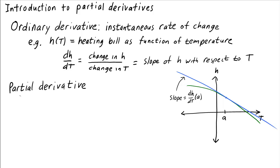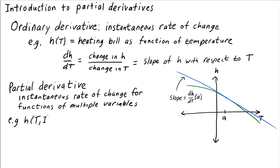A partial derivative extends this idea to functions of multiple variables. For example, we could extend our heating bill function so that it gives the heating bill as a function not only of the temperature T, but also of the amount of insulation I that you have in your house.